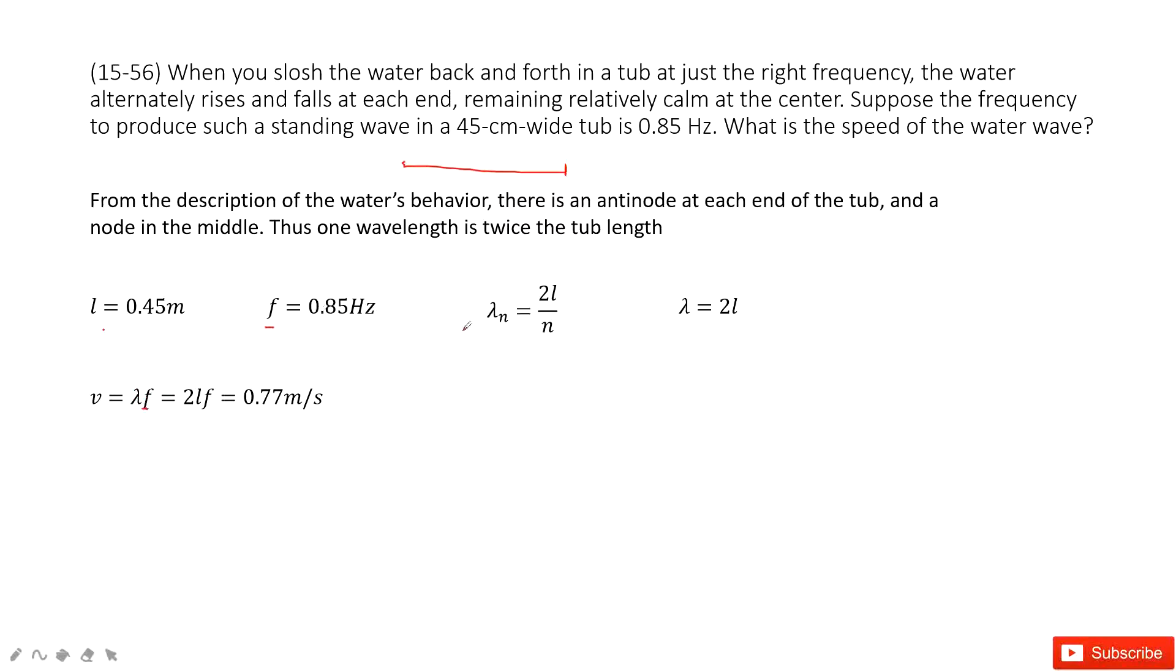Then how can we get lambda? So we learned in this chapter, the standing wave's lambda n is 2L over n. n is an integer. It tells us how many nodes.